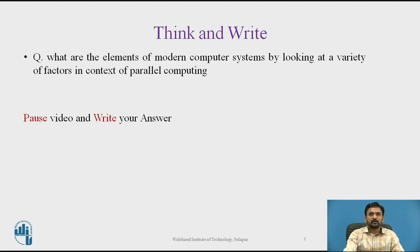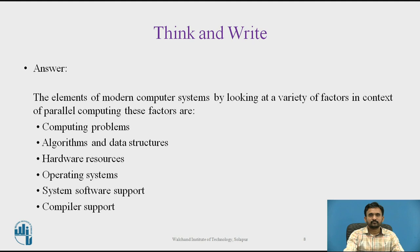The question is: what are the elements of modern computer systems, characterized by a variety of factors in the context of parallel computing? In the context of parallel computing, the different elements in modern computers are: computing problem, algorithm and data structure, hardware resources, operating system, system software, and compiler support. We have already checked computing problems and algorithm and data structure, and now we move on to hardware resources.